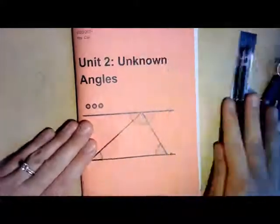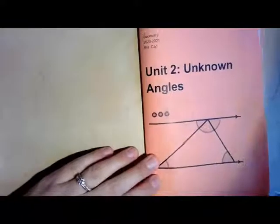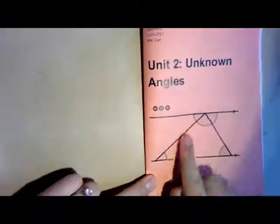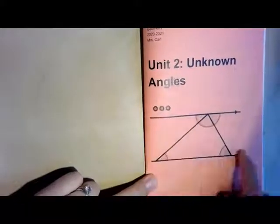Let's take a moment to investigate our new booklet. So, Unit 2, Unknown Angles. We have this diagram here that involves a triangle and two parallel lines. You'll see this later on. Inside, of course, we have our Geometry Journal, followed by the Unit 2 Summary.